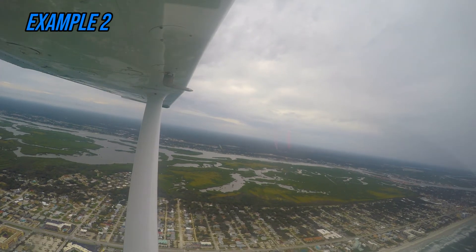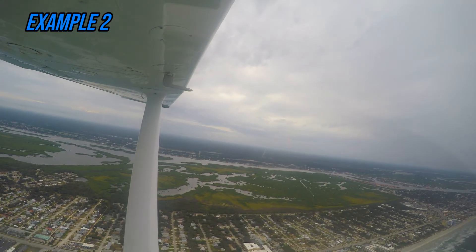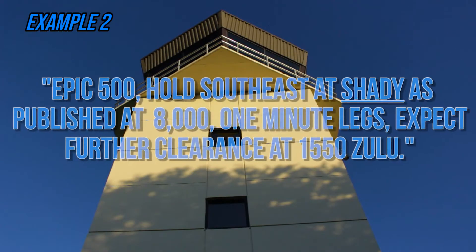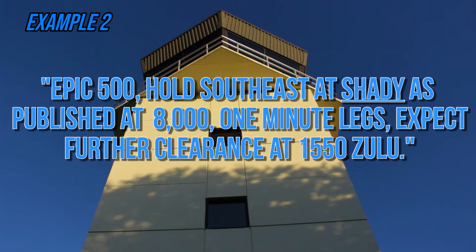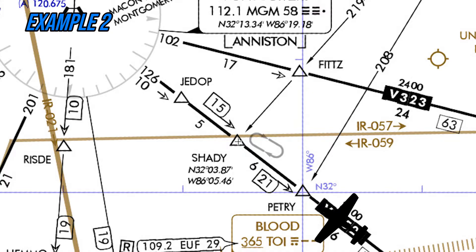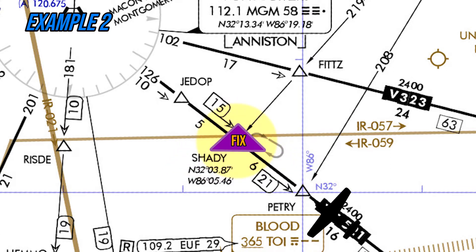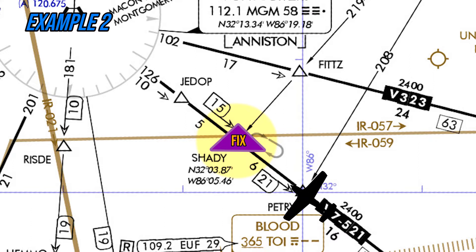Example 2. If a pilot was flying northwest along Victor 7-521 at 8,000 feet MSL and air traffic control instructs: 'EPIC 500, hold southeast at Shady as published, 1-minute legs, expect further clearance at 1550 Zulu.' The pilot would repeat their holding clearance to ATC and fly directly to the Shady fix. The pilot would also slow the aircraft to at least 230 knots, because they are holding between 6,001 and 14,000 feet MSL, at least 3 minutes prior to reaching Shady. Since the hold at Shady is published, the pilot would need to refer to their en route chart and determine the inbound and outbound headings.